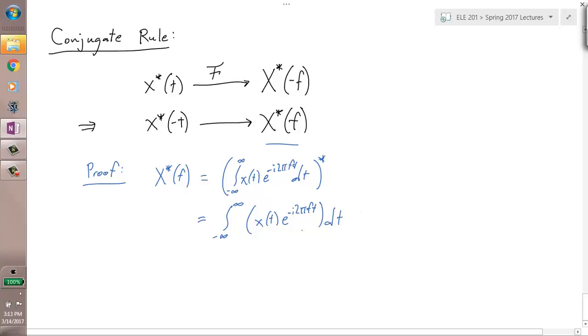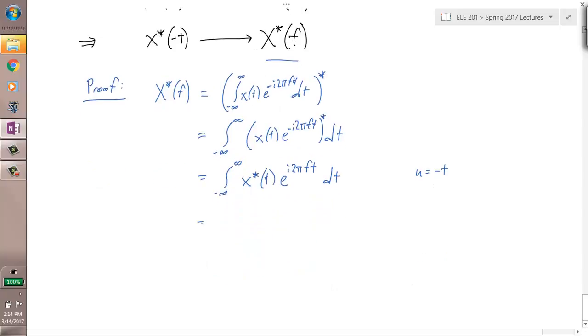And now the conjugates split when you have a product that becomes a conjugate of each. So it's X conjugate of T, E to the, and now the conjugate of this exponential is just going to make the exponent positive rather than negative. We're almost there. I do want that negative in the exponent, so I'm going to do a double negative in the exponent. I'll put a negative in front, and I'll make it negative T. And I'll do a change of variables, U equals negative T.